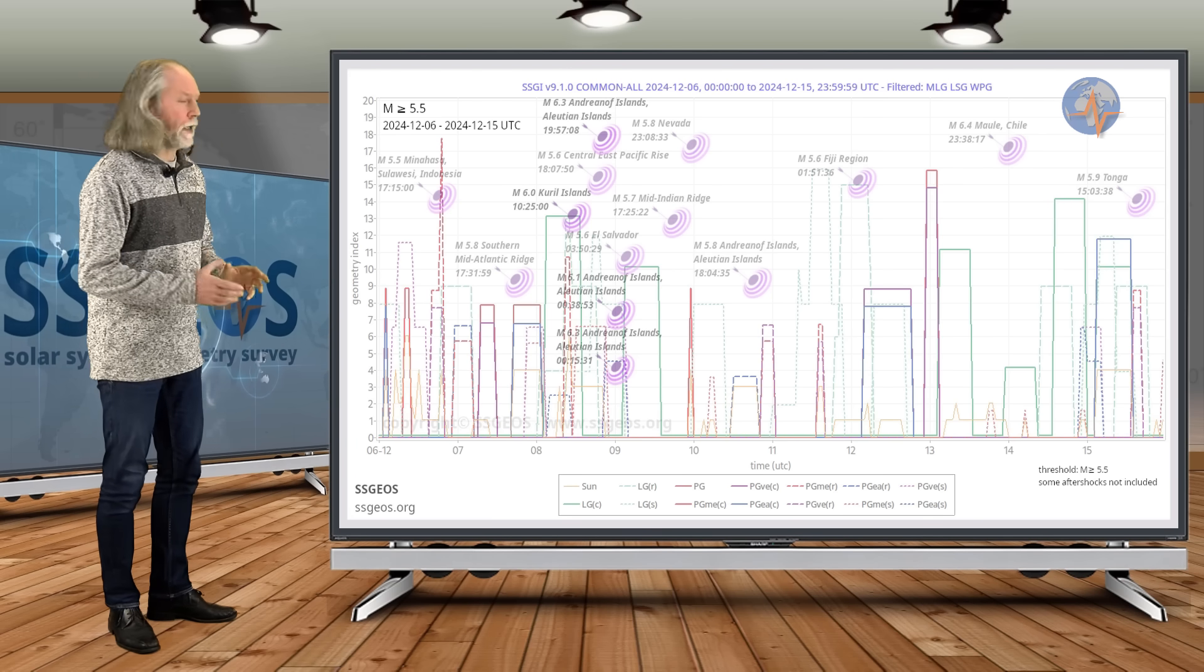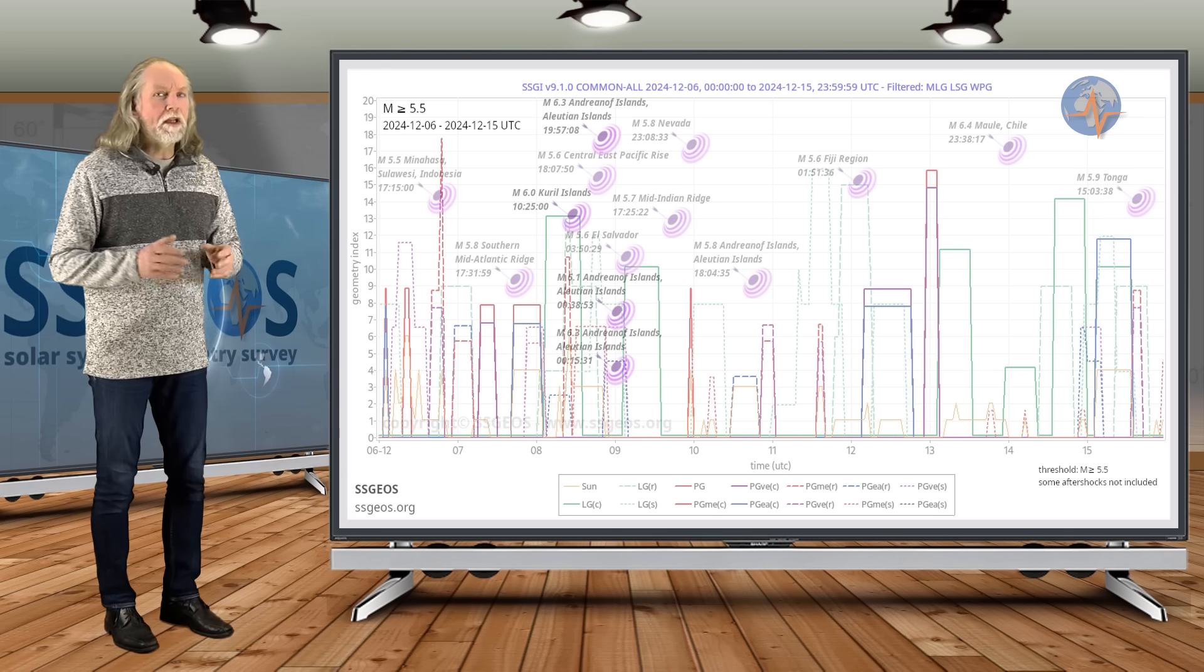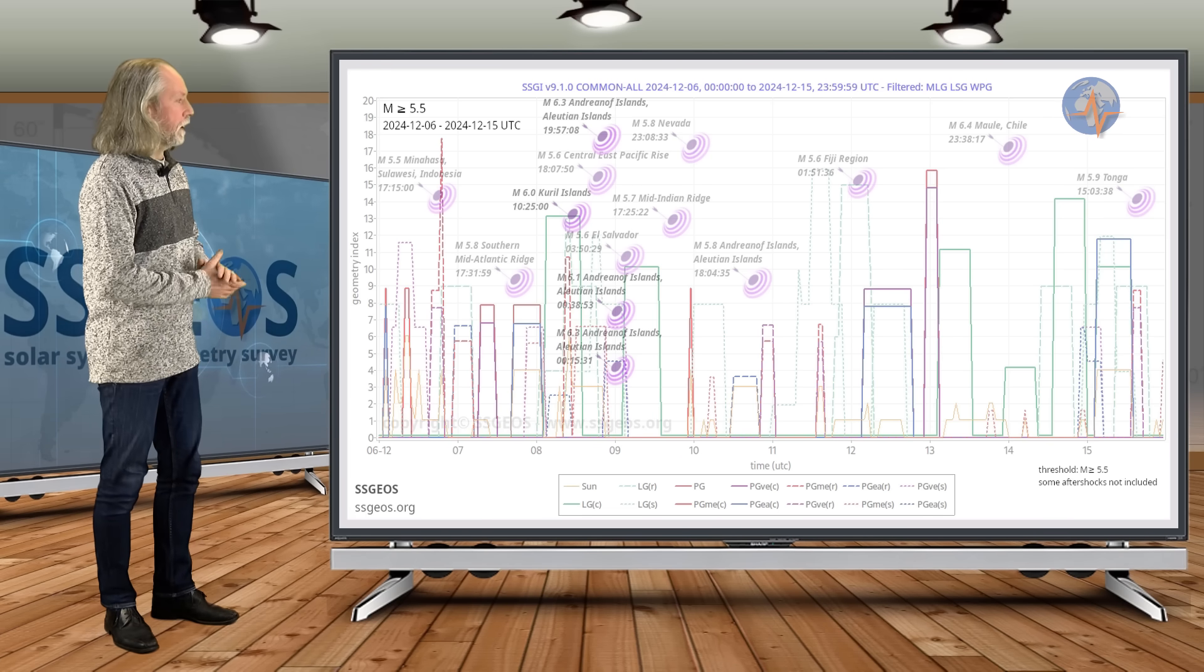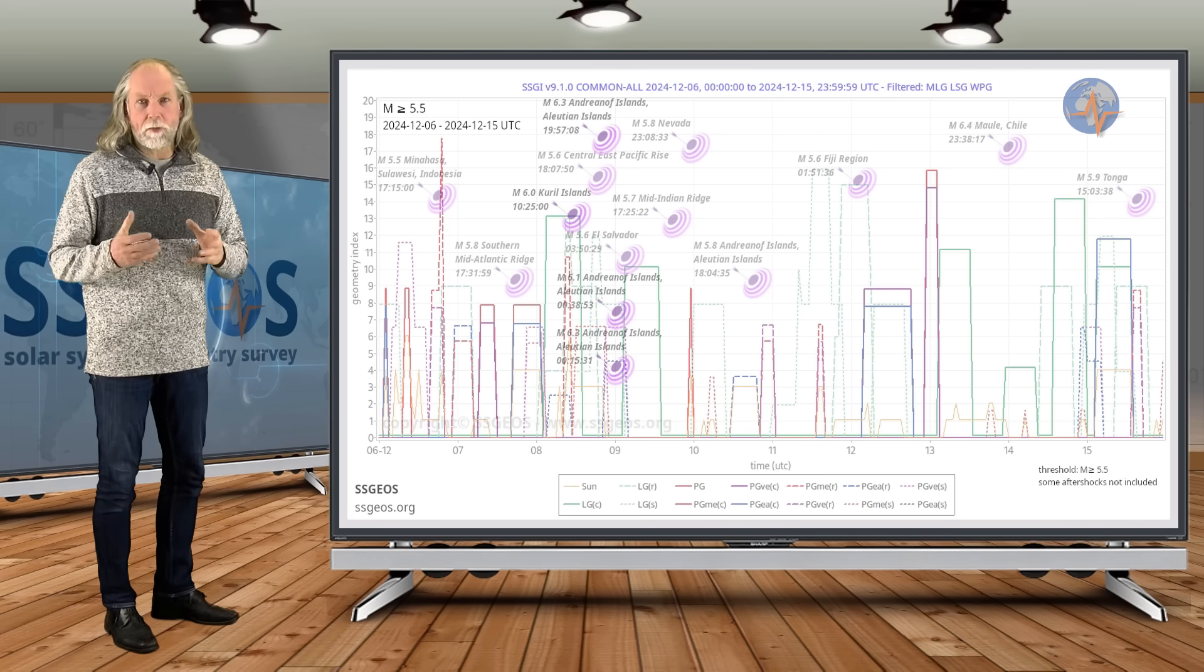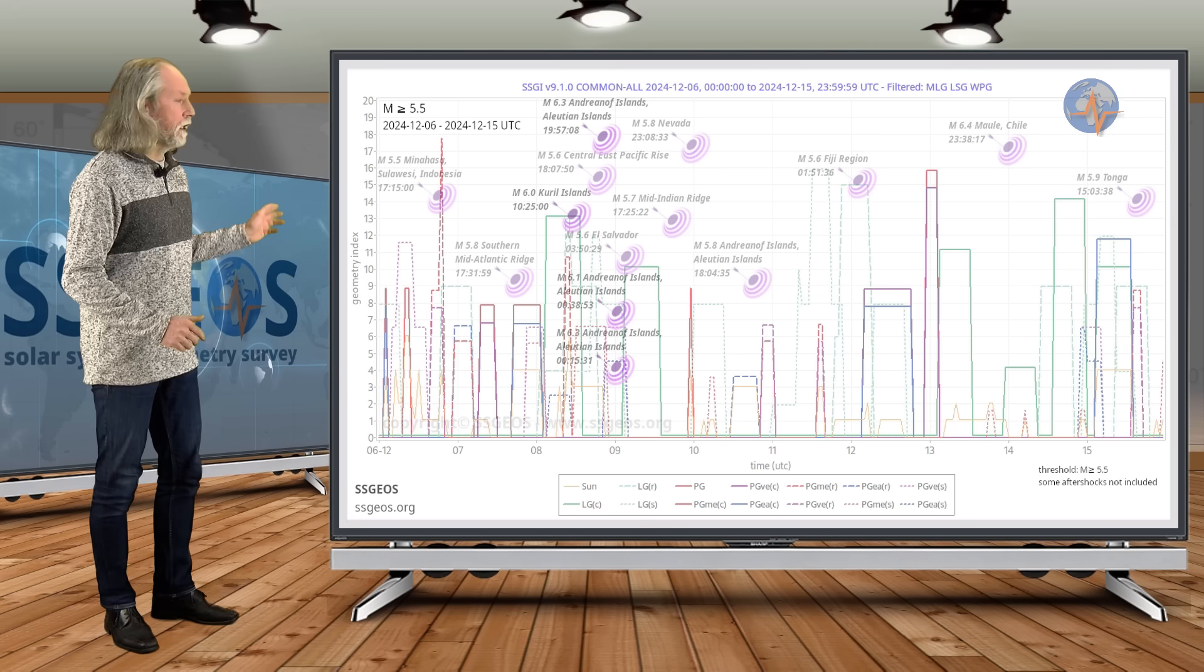So keep in mind, later today or tomorrow there is the potential of a larger earthquake. It could be in the 7 magnitude range, especially because of the lunar conjunction with Jupiter late on the 14th. If we count about two and a half days, we end up later today or tomorrow. There is a slight possibility there, but it also depends on the stress levels in Earth's crust.